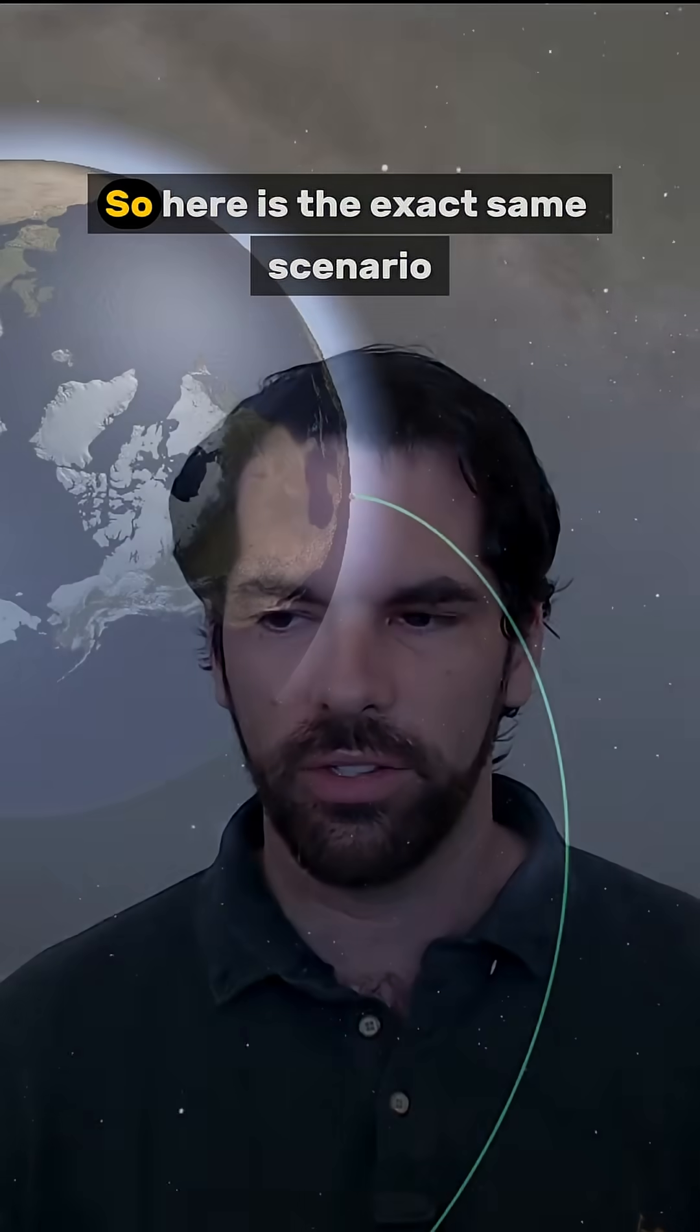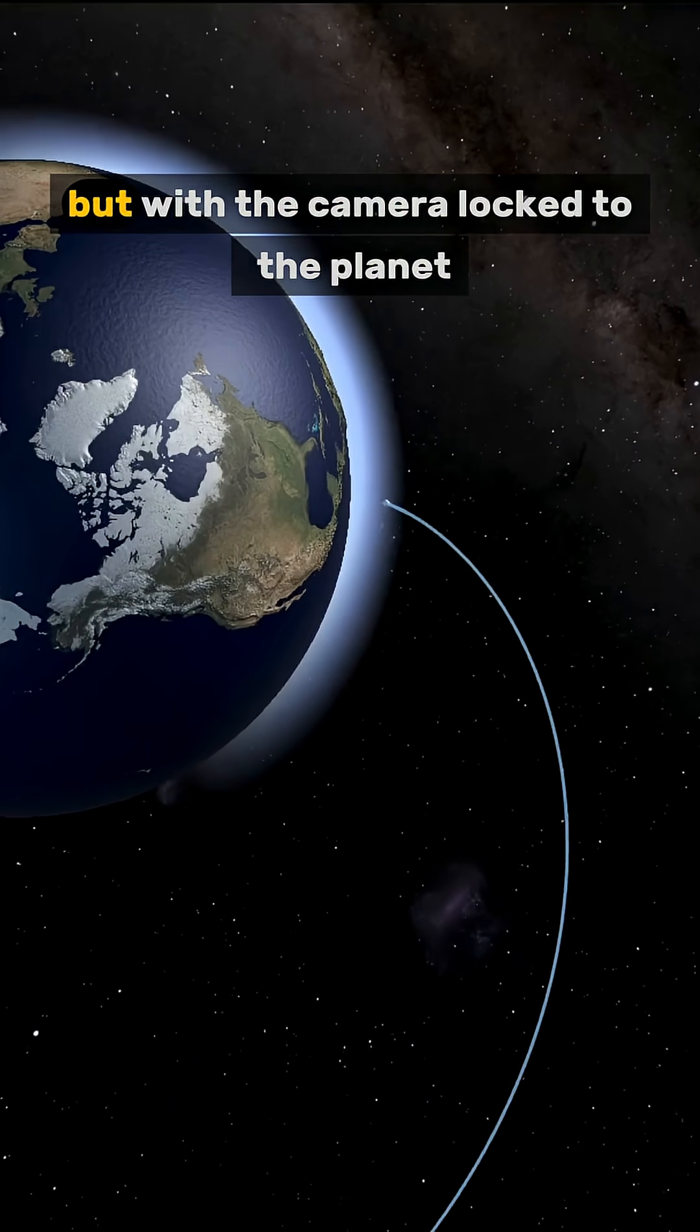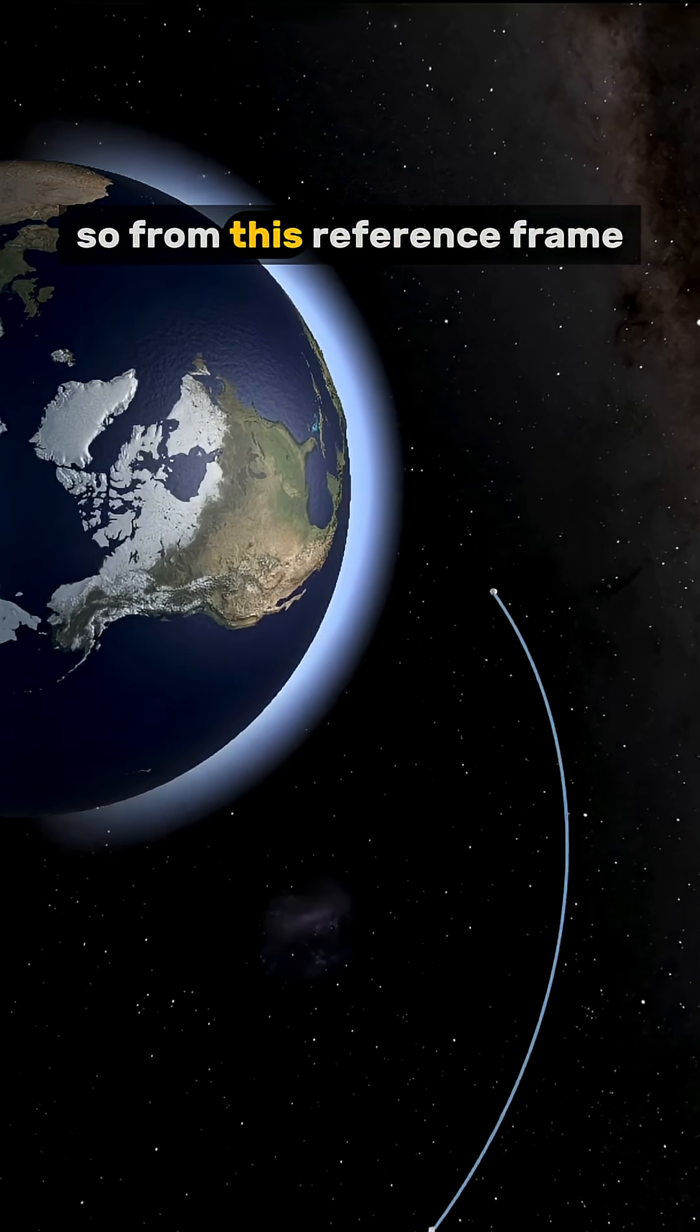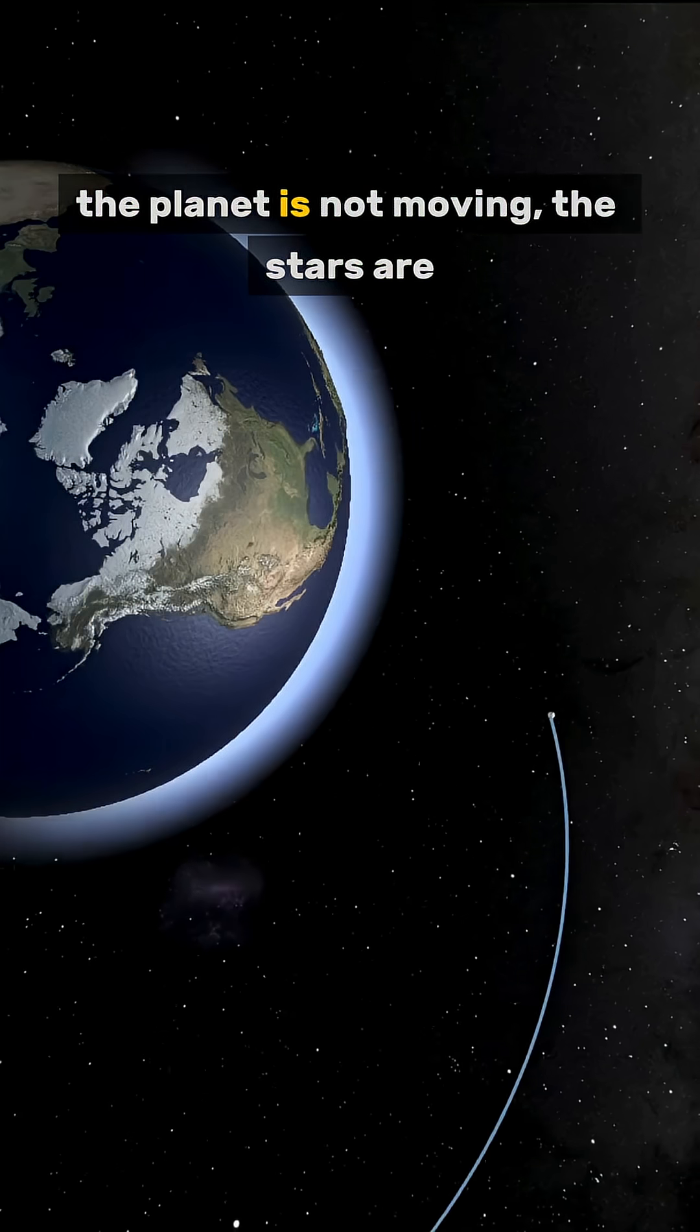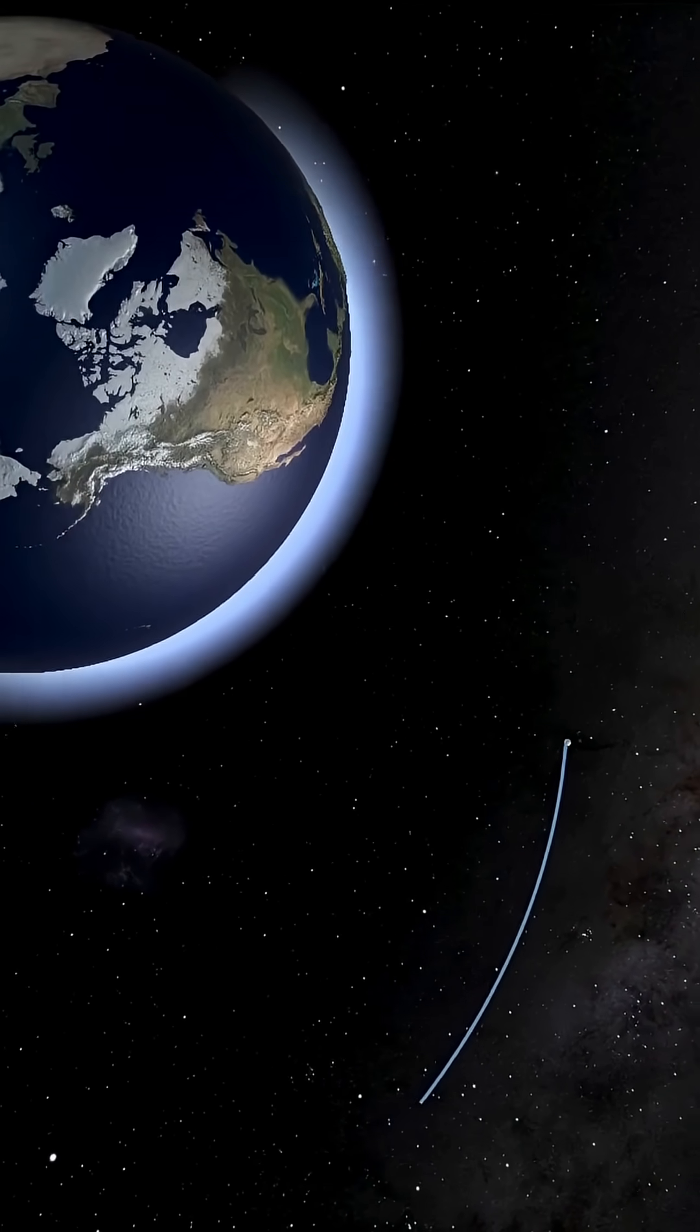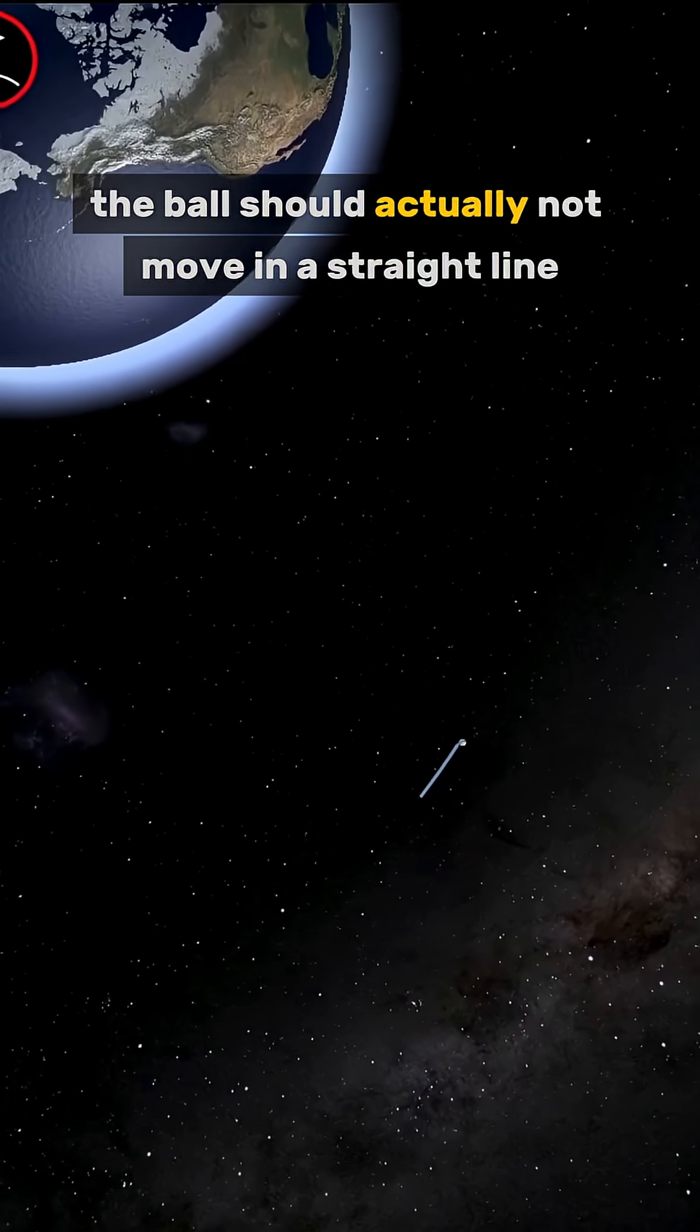So here is the exact same scenario but with the camera locked to the planet. From this reference frame, the planet is not moving, the stars are, and to be physically correct, the ball should actually not move in a straight line.